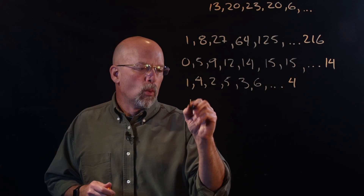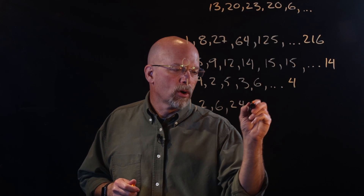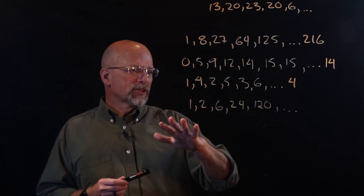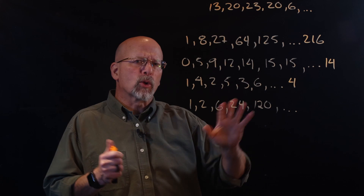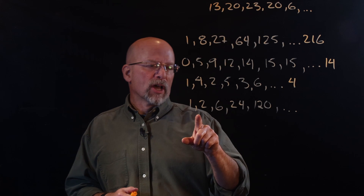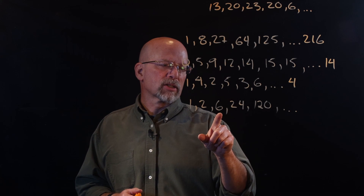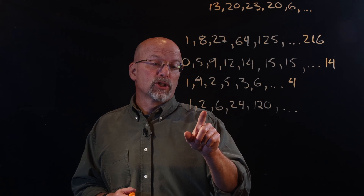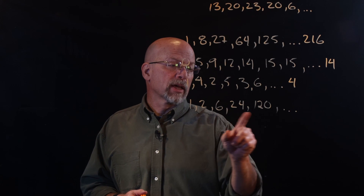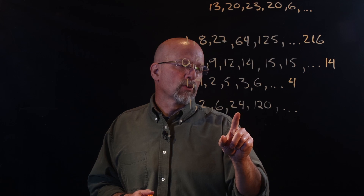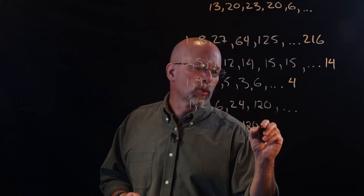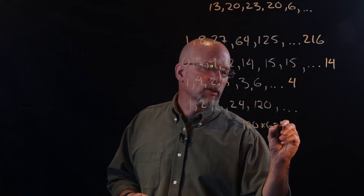How about one more: one, two, six, twenty-four, one hundred twenty? Since it's increasing quickly, multiplication may have something to do with it. Two is two times one, six is three times two, twenty-four is four times six, and five times twenty-four is one hundred twenty. So the next one is six times one hundred twenty — seven hundred and twenty.